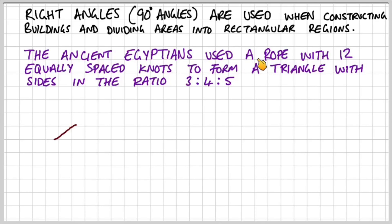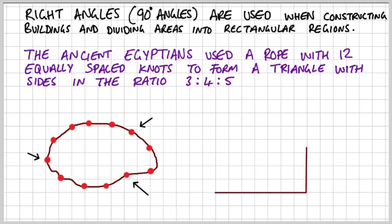The ancient Egyptians used a rope with 12 equally spaced knots to form a triangle with sides in the ratio of 3 to 4 to 5. And what they'd done is they pulled it taut at one corner to form a right angle triangle.